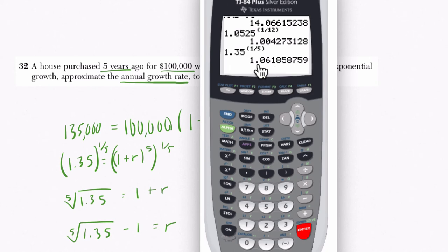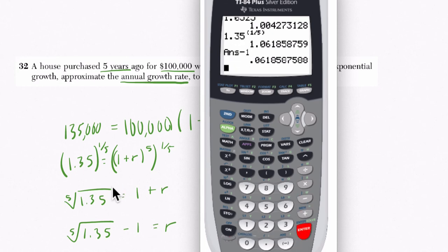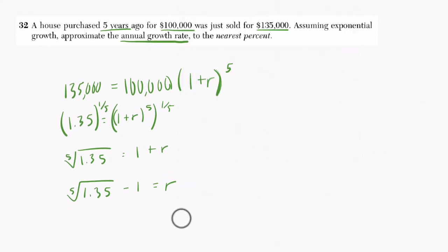So that's 100%, that would be this 1 right here. And then 0.06, that's our 6% growth rate. The math shows us that because we subtract the 1 away, we're left with the growth rate of 0.061. They want the nearest percent, so r is about 6%.